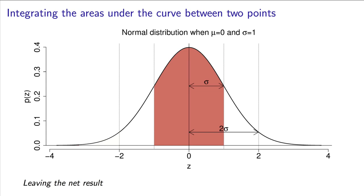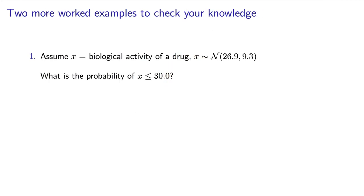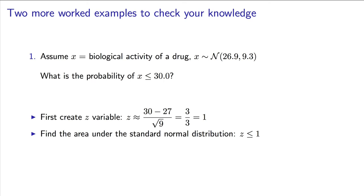Let's have two more examples. What is the probability of observing a biological activity from a process when the biological activity values are normally distributed, with a mean of about 27 and a variance of about 9 units squared? You should be able to do this without a calculator. First, let's standardize. We want a probability of x less than or equal to 30. In standard variables, we have to say 30 minus the mean divided by the standard deviation. That's 30 minus 27 divided by the square root of 9. Our question then becomes, what is the probability of a z value smaller than or equal to 1? That's easy. It's about 84%. And that's the answer to the question.